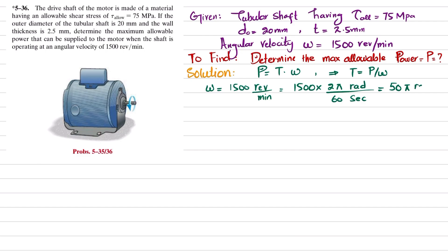So now we have T equal to P divided by omega, which is 50π. That is, T = P / (50π).